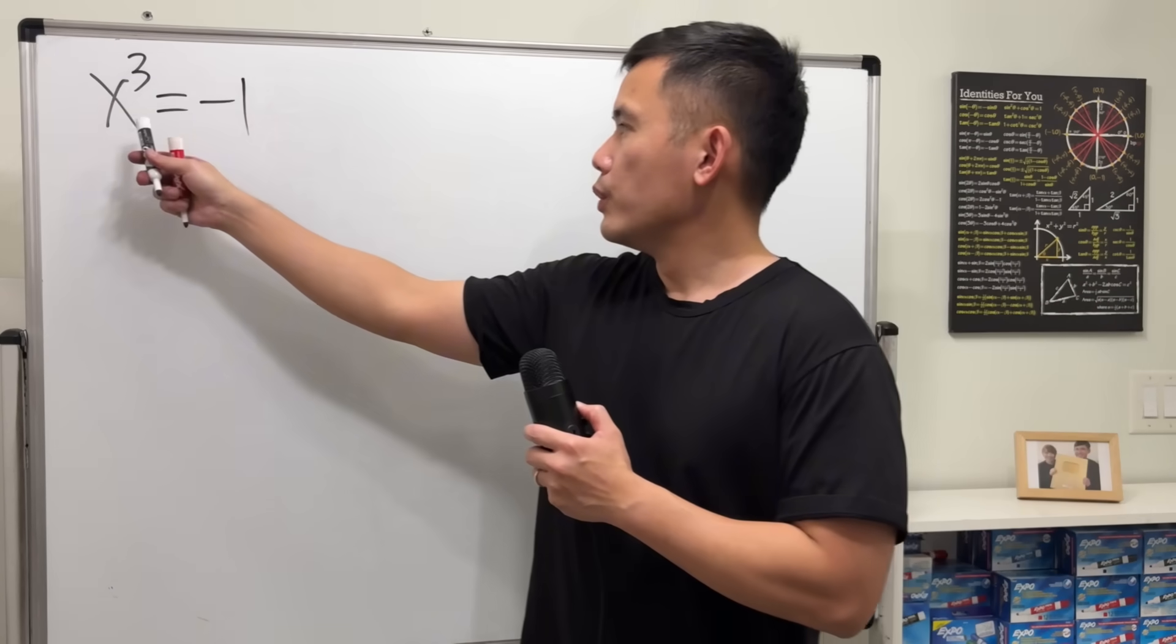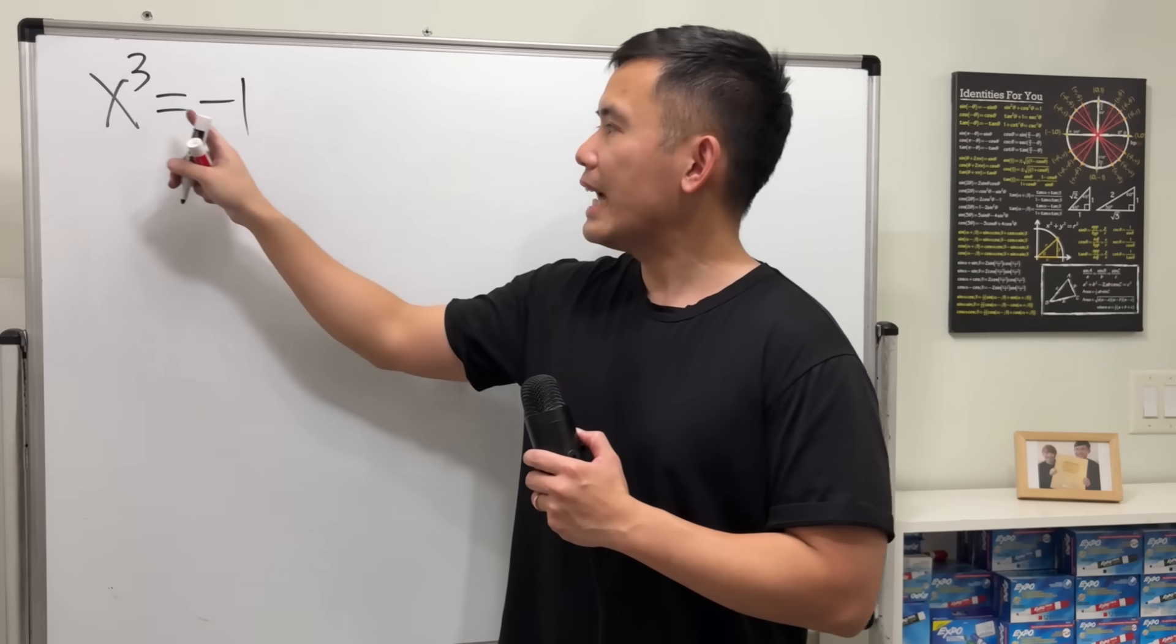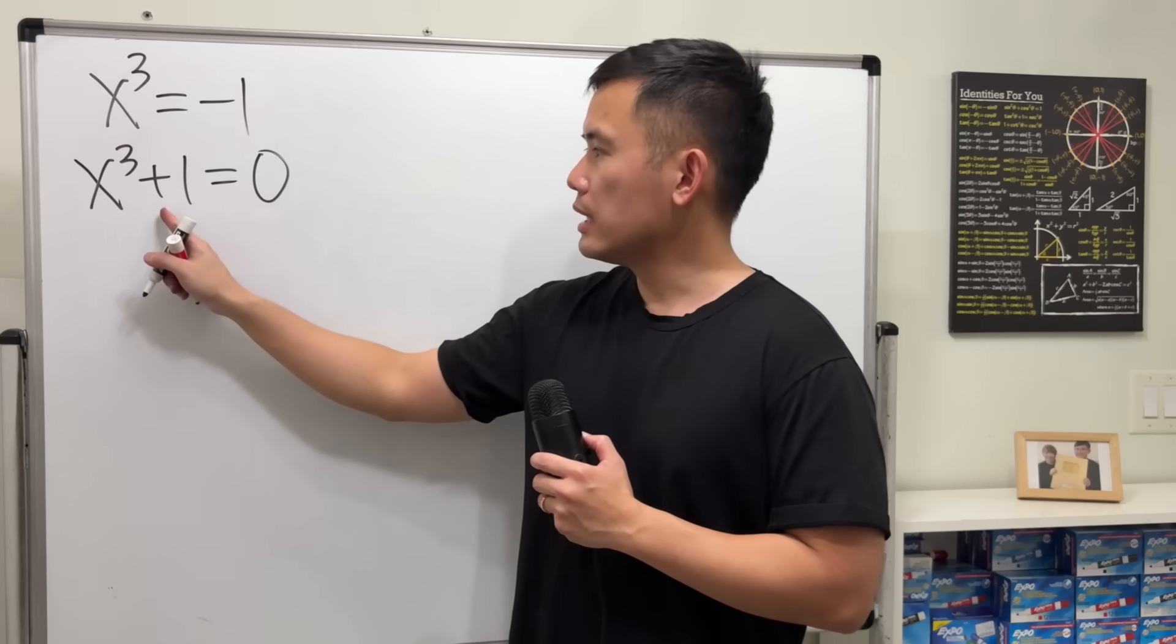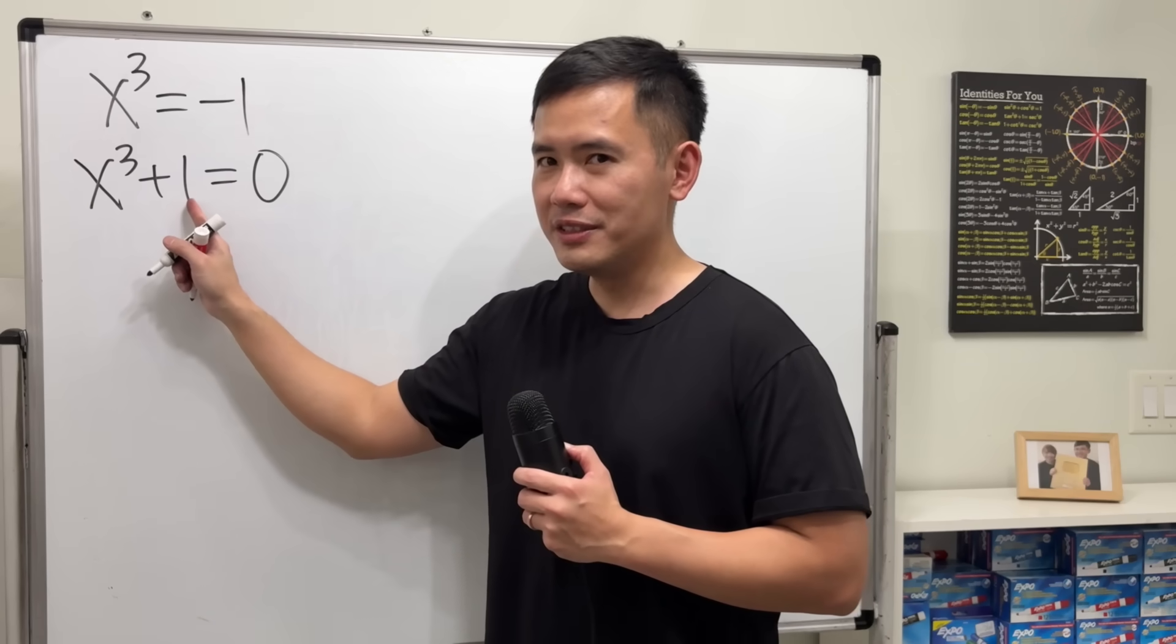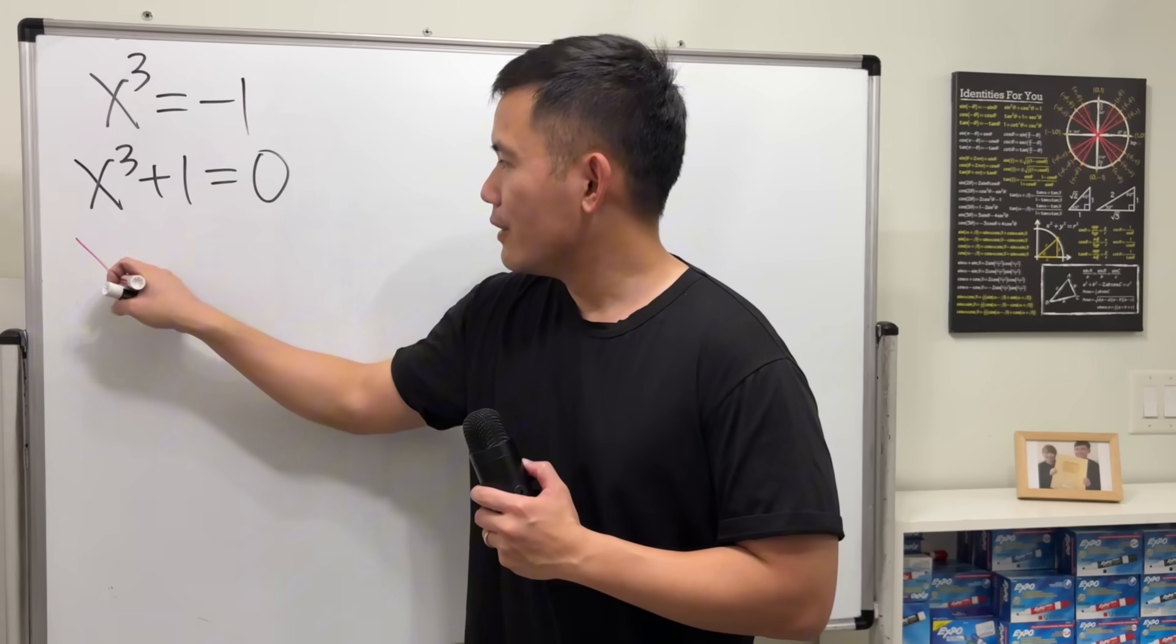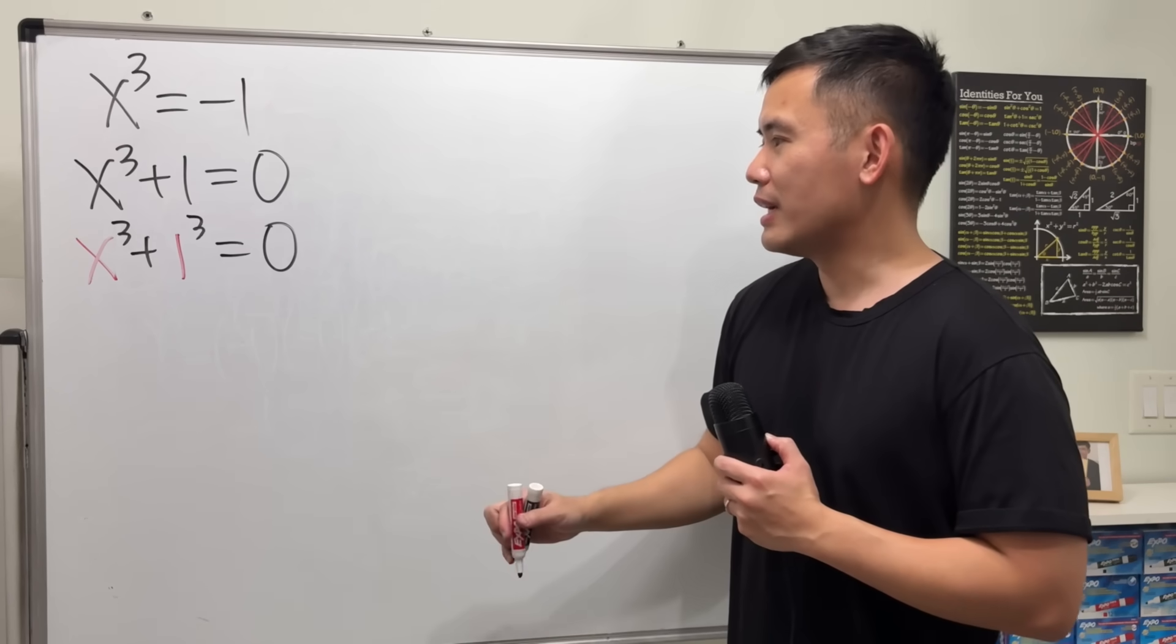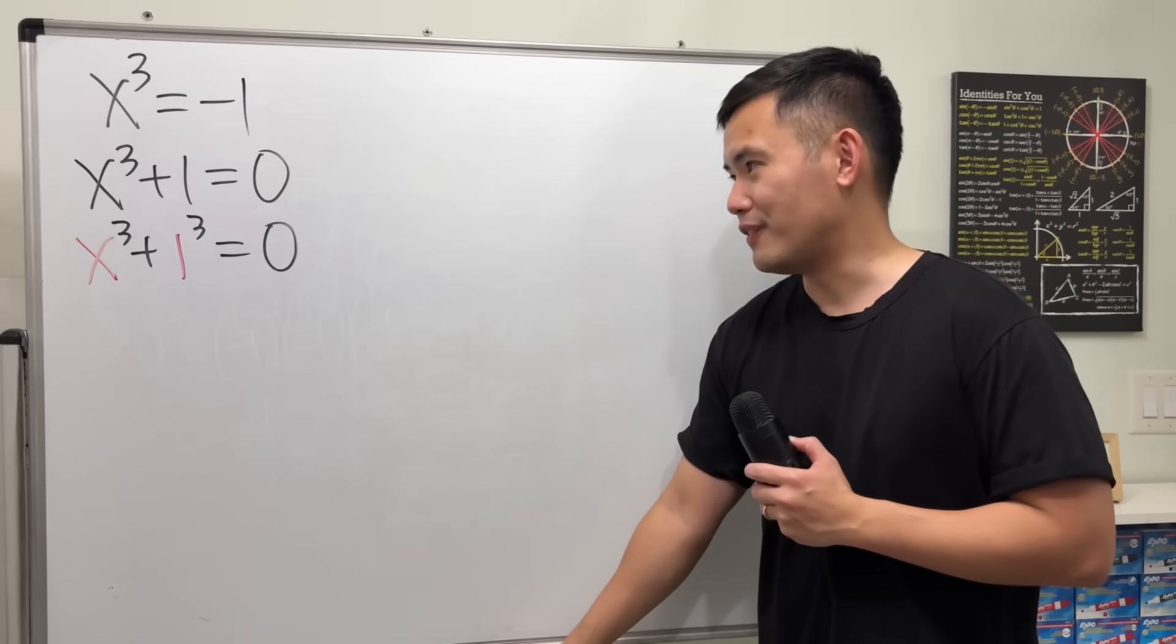We start with the equation x cube is equal to negative 1. Let's add one to both sides. So we get x cube plus 1 is equal to 0. Notice now we have a sum, and in fact, this is x cube, and we can also look at this as 1 cube. So this is the sum of 2 cubes. So, x cube plus 1 cube is equal to 0. And the reason that we do that is so that we can use the sum of 2 cubes formula to factor this.